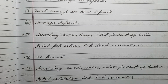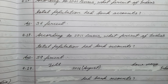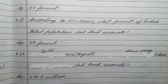Question number seventeen: according to the 2001 census, what percent of India's total population had bank accounts? Answer: 36 percent. Question number eighteen: according to the 2011 census, what percent of India's total population had bank accounts? Answer: 59 percent. Question number nineteen: till August 2014, how many Indians had bank accounts? Answer: 210.5 million.